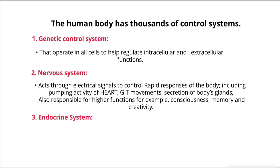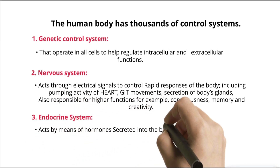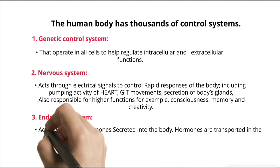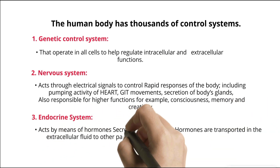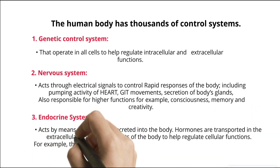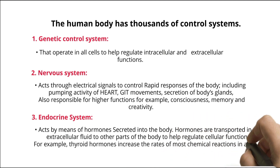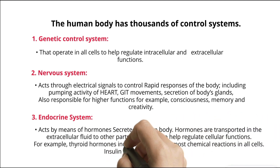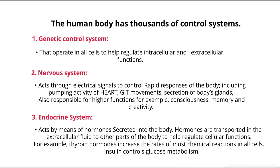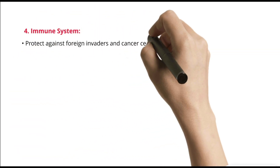3. Endocrine system — acts by means of hormones secreted into the body. Hormones are transported in the extracellular fluid to other parts of the body to help regulate cellular functions. For example, thyroid hormones increase the rates of most chemical reactions in all cells. Insulin controls glucose metabolism.